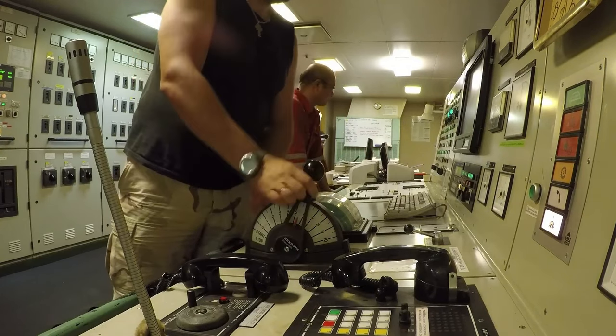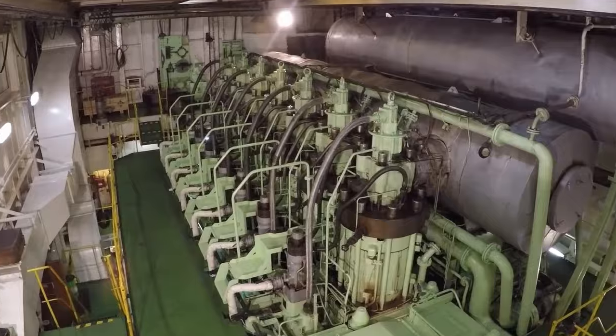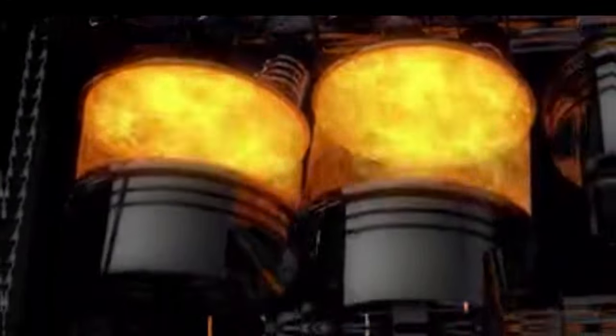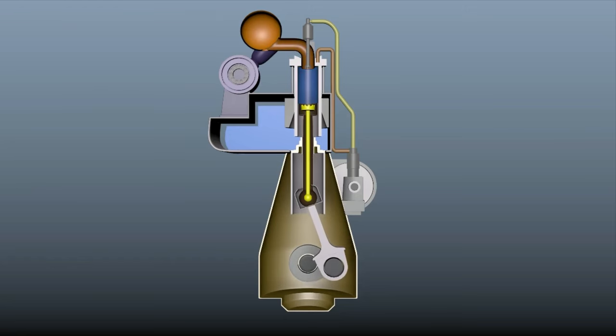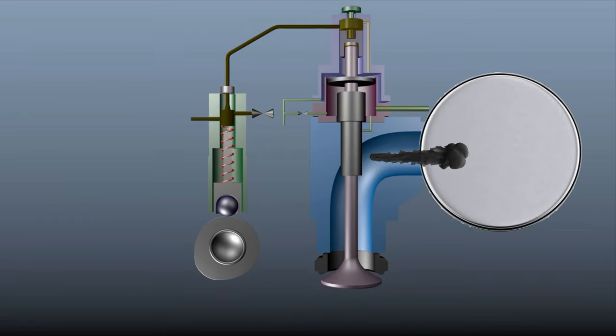When the engine is started, it compresses and burns the fuel. Some of the energy gets wasted and produces exhaust gases, which needs to be drawn out of the cylinder using an exhaust valve. These exhaust gases from each cylinder go to an exhaust trunk.